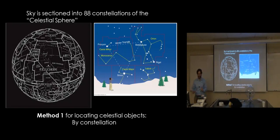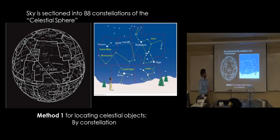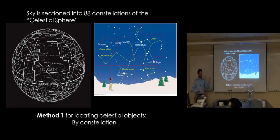So this is method one. This method will work pretty well for things that are really bright and really obvious. For instance, there was a nearby supernova that was brighter than any other star in the sky. You would be able to tell somebody where it was simply by saying there's a supernova in Orion visible with the naked eye. This works for things that are either really obvious, really bright, or you just have to locate them really roughly.